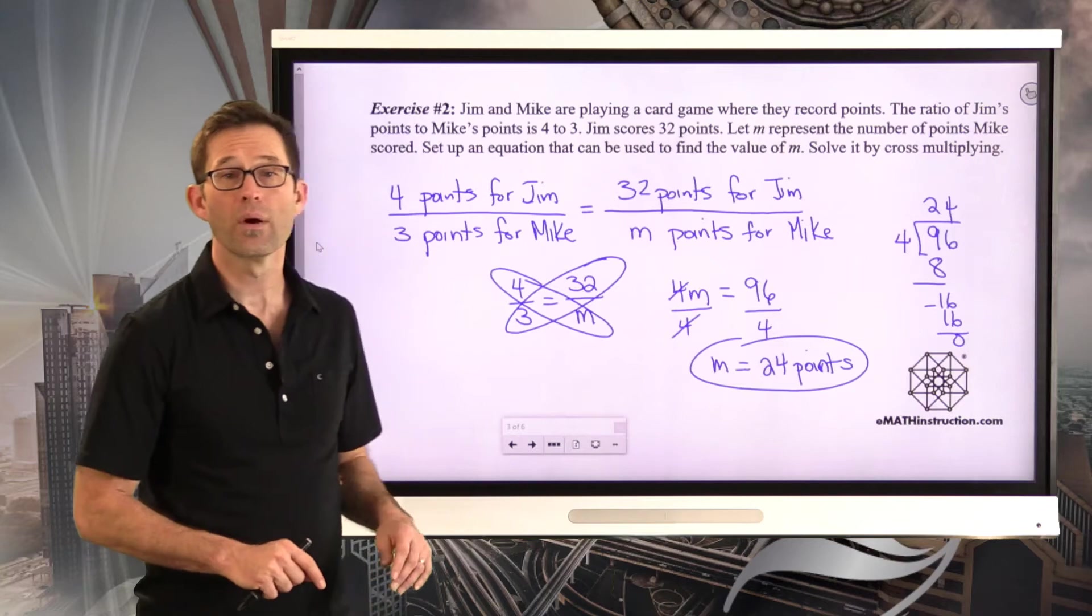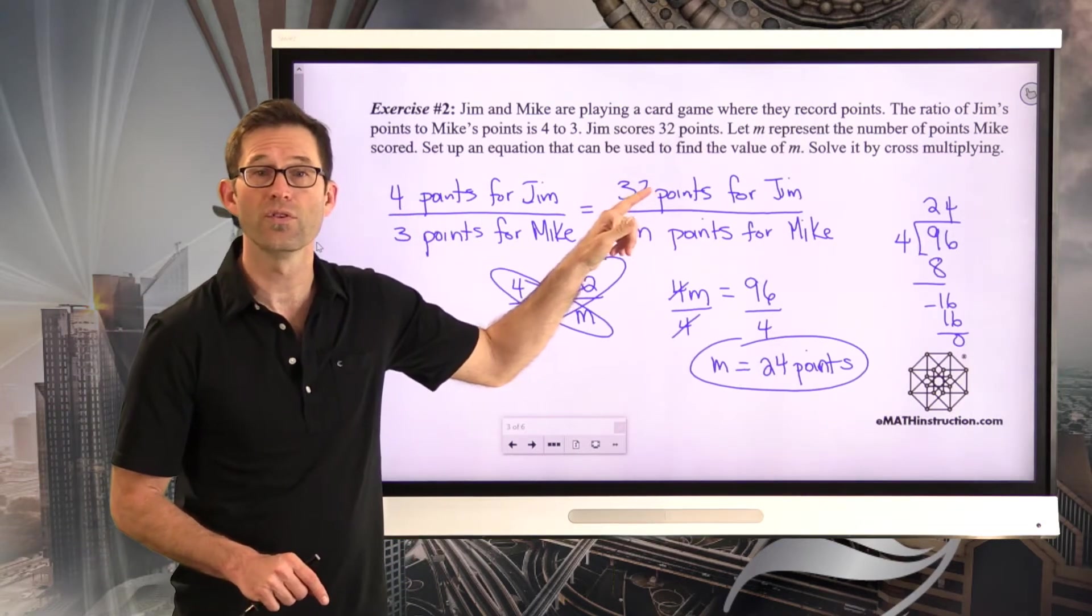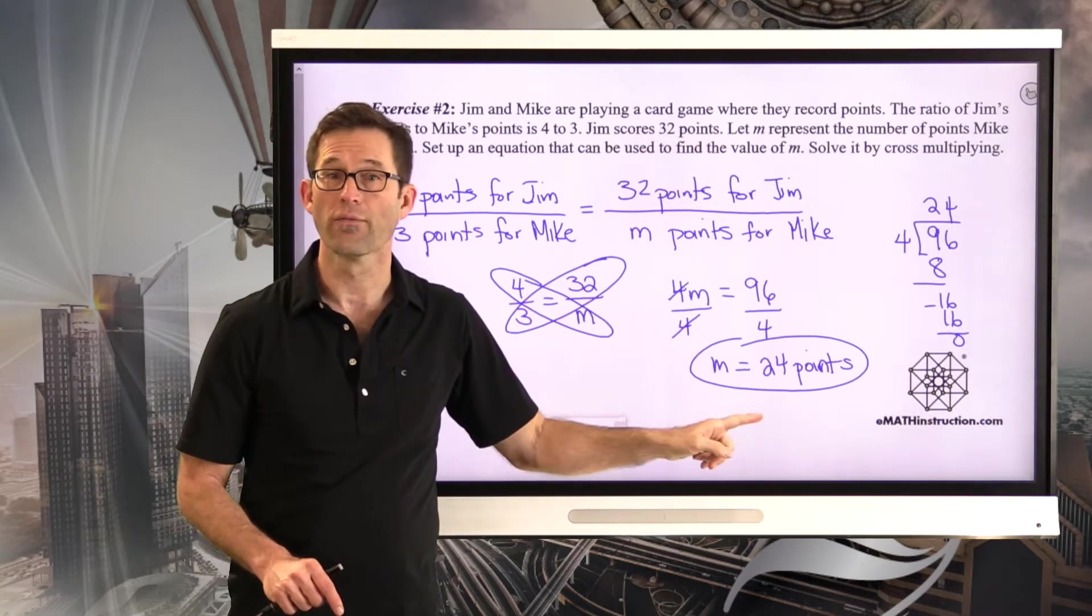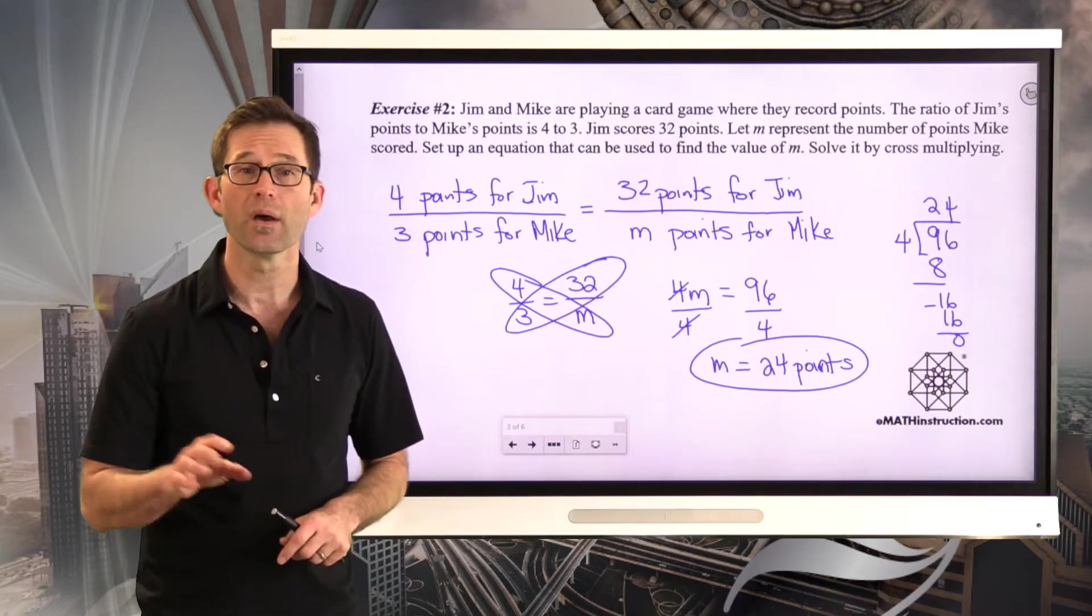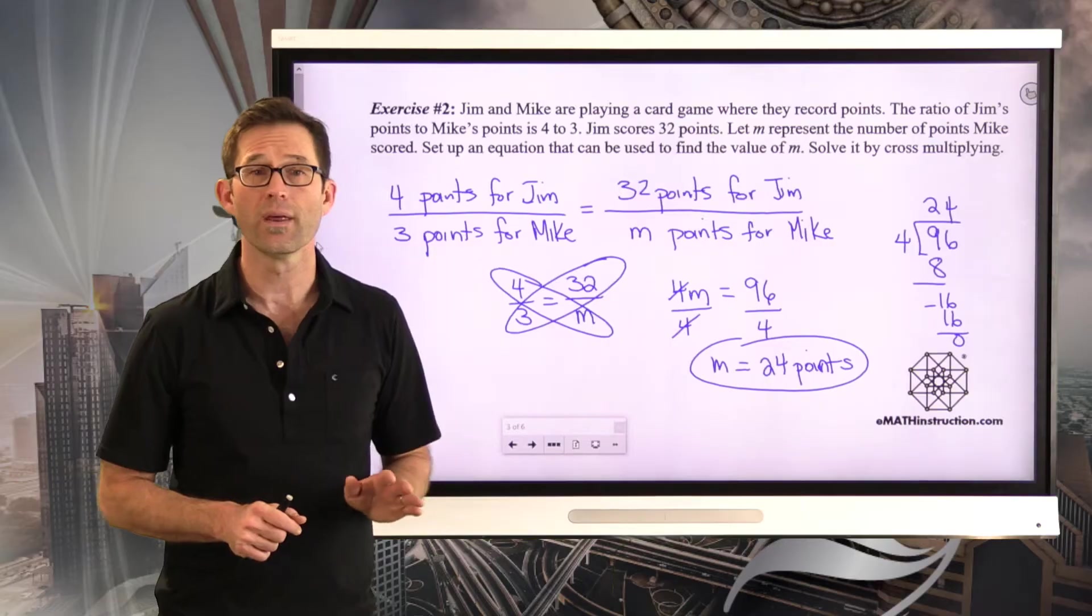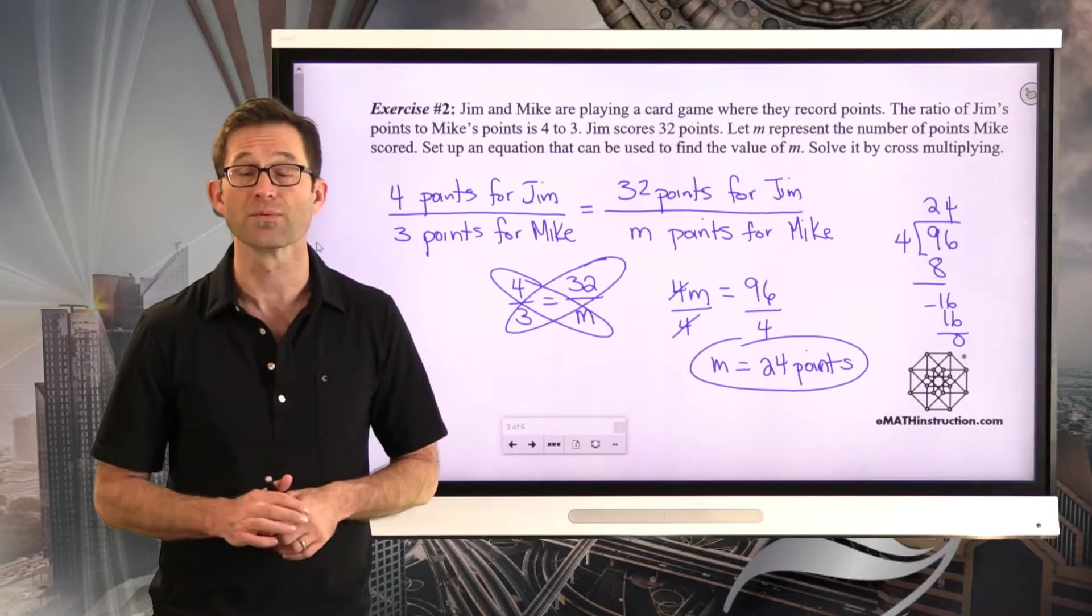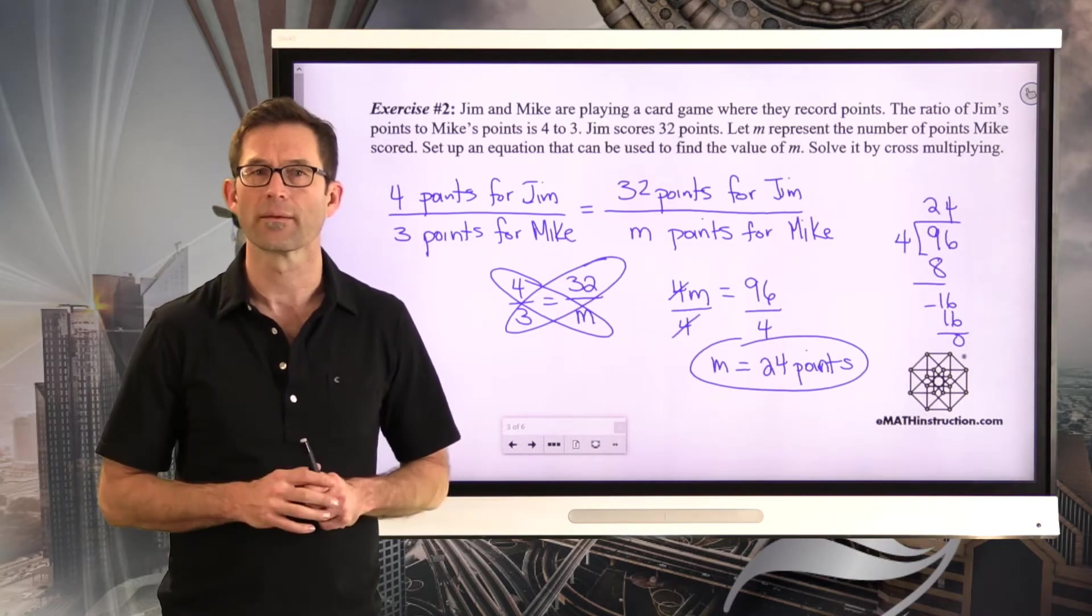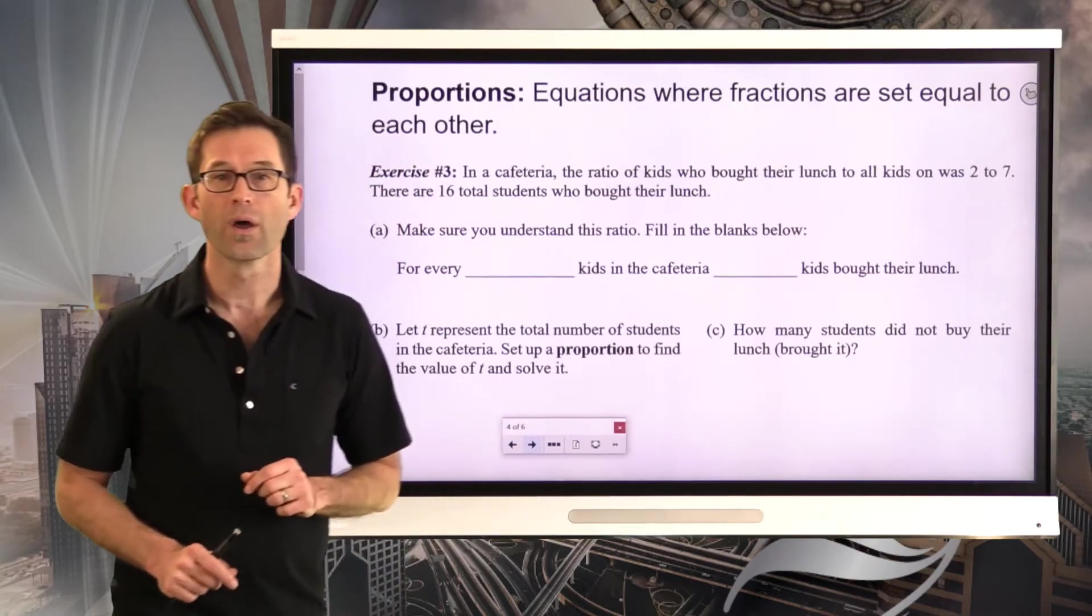Now I don't want to take anything away from somebody who might say, well, if I've got 4 over to 32, I'd multiply by 8, so 3 times 8 gives me 24. That is a wonderful thing because it means that you understand the idea about scaling a ratio. But the whole point of what we're doing today is to look at a different technique that we can use to solve these problems, specifically to use algebra to solve them instead of the scaling.